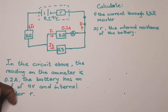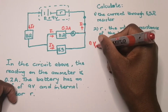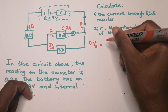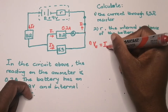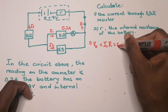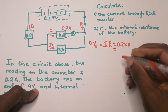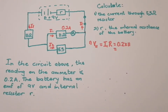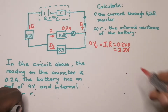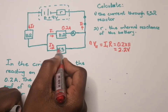Since voltage is the same across parallel resistors, the voltage across the 5.5-ohm resistor equals the voltage across the 11-ohm resistor. I have the most information about the 11-ohm resistor, so I'll start there. V_parallel equals i1 multiplied by R, which is 0.2 multiplied by 11 ohms, giving us 2.2 volts. That is the voltage across the 11-ohm resistor, and since it's a parallel combination, it's also the voltage across the 5.5-ohm resistor.